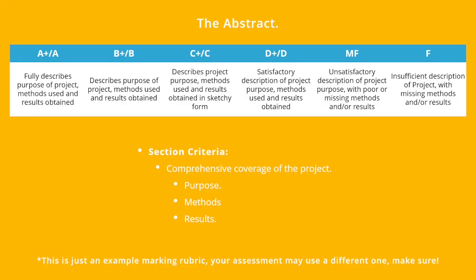Moving on, here's the marking rubric for an abstract. As you can see, there are three criteria for the abstract: purpose, methods, results. It's almost like they want you to use the three paragraph structure. Wink, wink, nudge, nudge.